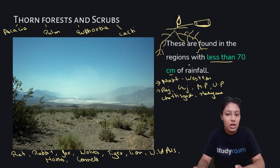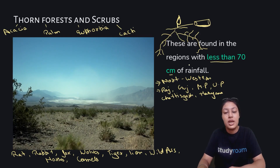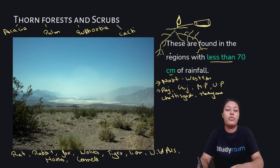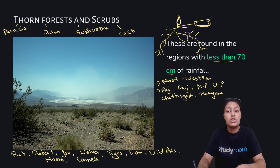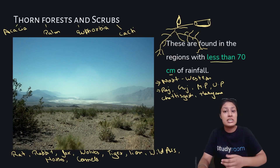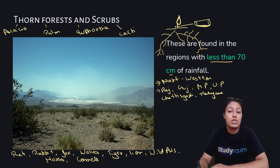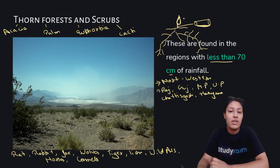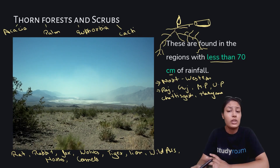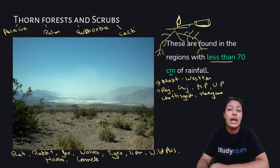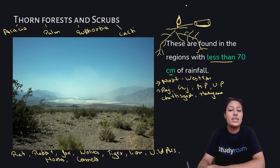The roots of these trees are very, very long so they can go deep to find water and moisture. The stems are mostly succulent so they can absorb water for a longer period of time, since it barely rains in that area. The leaves are majorly thick and small so they won't evaporate easily. Animals found here include camels, horses, wild ass, lion, tiger, rabbit, rats, foxes, and wolves.